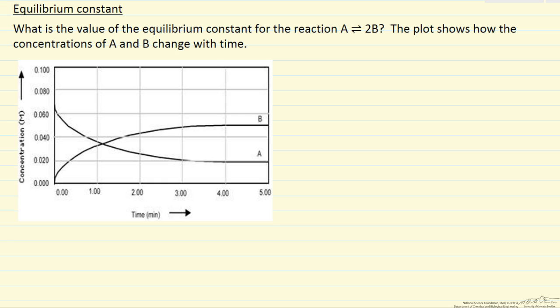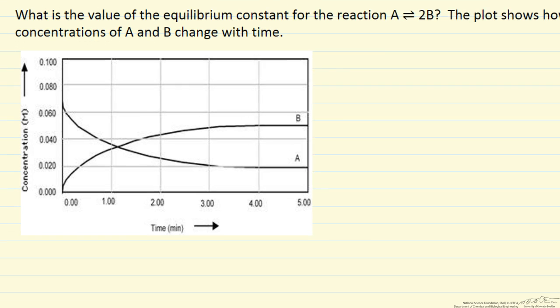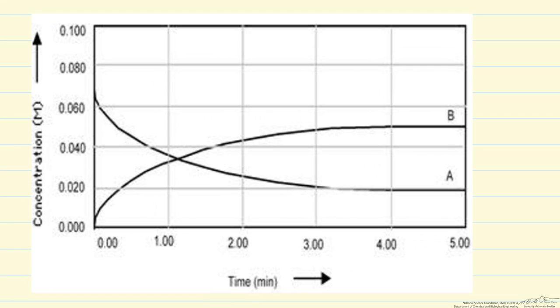In this problem we are given concentration data as a function of time. So we have reaction A that goes to 2B, and we can see the concentration of A is decreasing, concentration of B is increasing as the reaction proceeds.